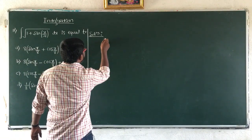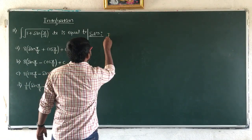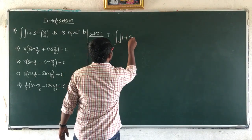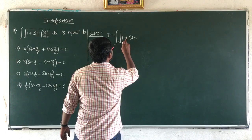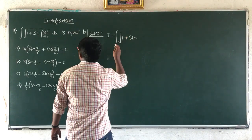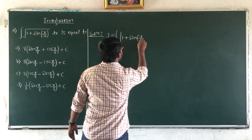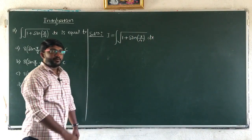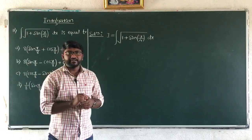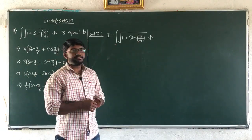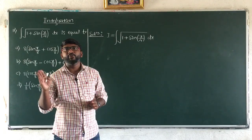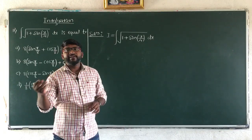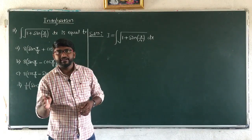We will write the given integral as I, which is equals to integral of under root of 1 plus sin(x/4) dx. Now, by making use of the half-angle formula, sin(x/4) can be written as 2·sin(x/8)·cos(x/8), and in place of 1, I can write sin²(x/8) plus cos²(x/8).